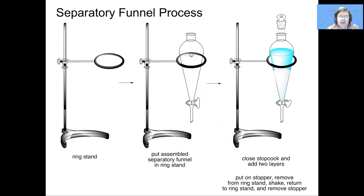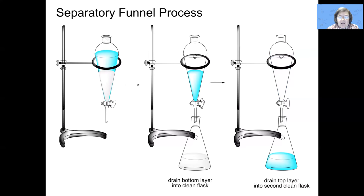Here's the overall process for using a separatory funnel. We have our ring stand with the clamp on it. We put our separatory funnel in, we close the stopcock, and then we add our two layers. We then insert the stopper, remove from the ring stand, shake, return to the ring stand, and remove the stopper. At that point, our separation is completed and we now have two layers containing different components. What we would then do is put a flask underneath the separatory funnel and drain one layer. First, the bottom layer would come out, and then we would swap and put in a second flask and drain the second layer. So now we have two flasks, one containing each layer.